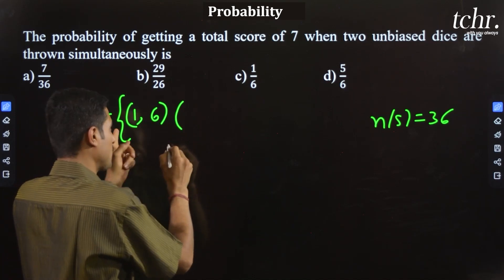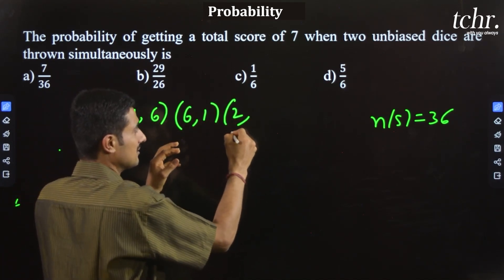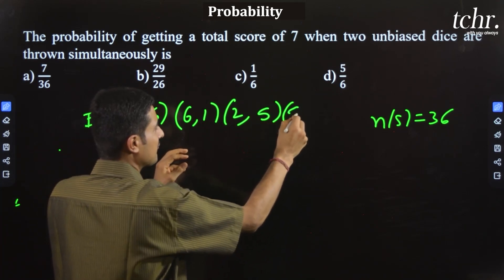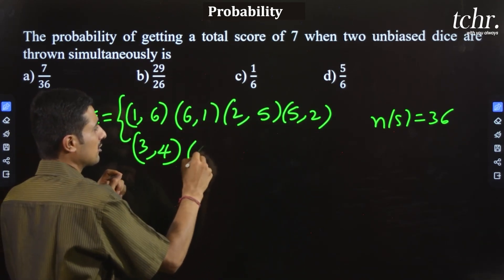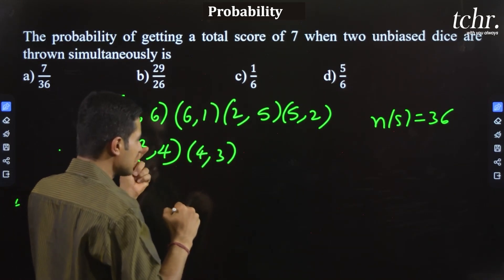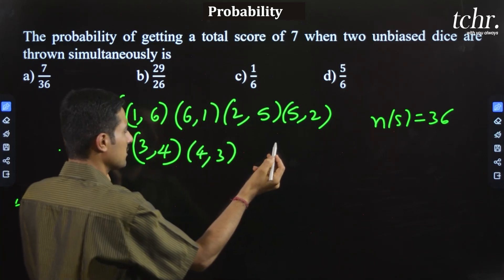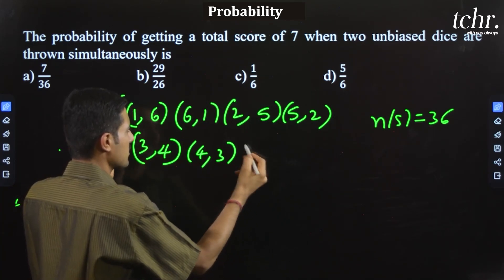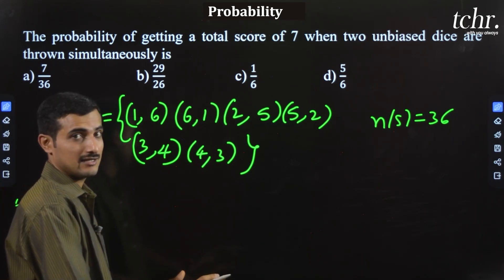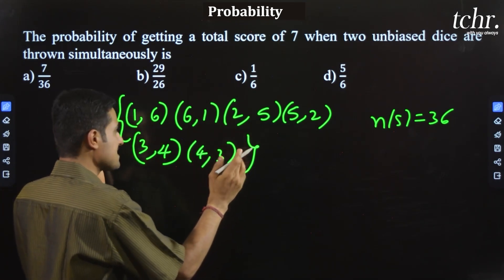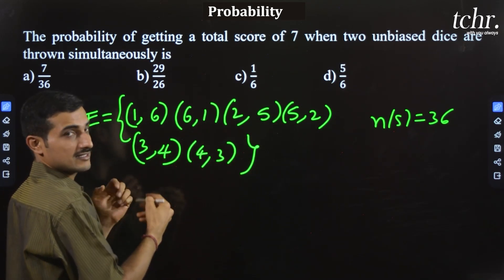Similarly, (1,6) and (6,1) are both valid pairs. Then (2,5) and (5,2), then (3,4) and (4,3). Checking further: five with two is already covered, and six with one is also covered. So to get a sum of seven, there are exactly six favorable outcomes — n of E equals 6.